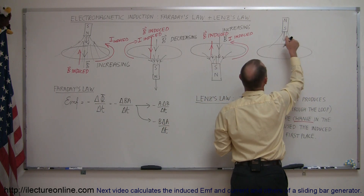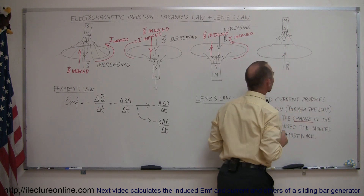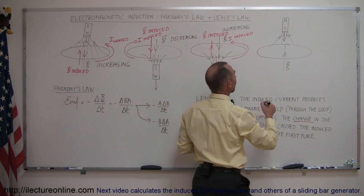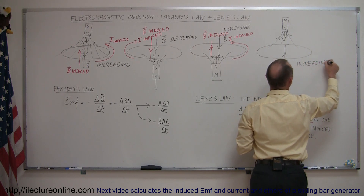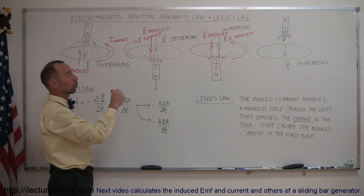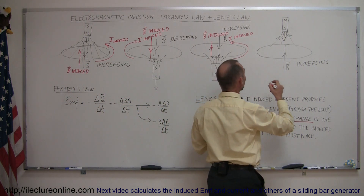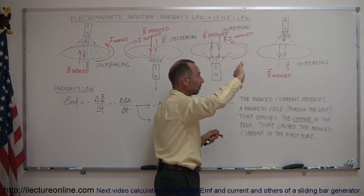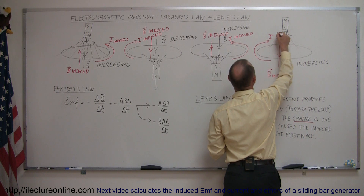In the last example, we have a magnetic field pointing toward the south end — in an upward direction — and it is increasing because we're bringing the magnet closer to the loop. The flux through the loop is increasing. The induced EMF, caused by the change in the flux, causes an induced current which sets up its own magnetic field that opposes the increase. To oppose an increase, you go in the opposite direction. So this will be B induced, pointing downward. Using the right-hand rule — pointing the thumb in the direction of the induced B field — the fingers curl in the direction of the induced current.